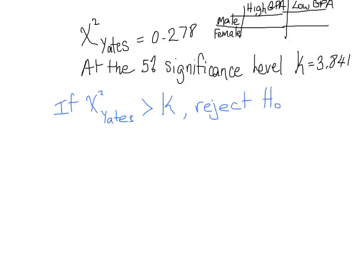What's our null hypothesis in this particular case? Well, we have one category, which is gender, and another category, which is GPA. Our null hypothesis states that gender and GPA are independent.